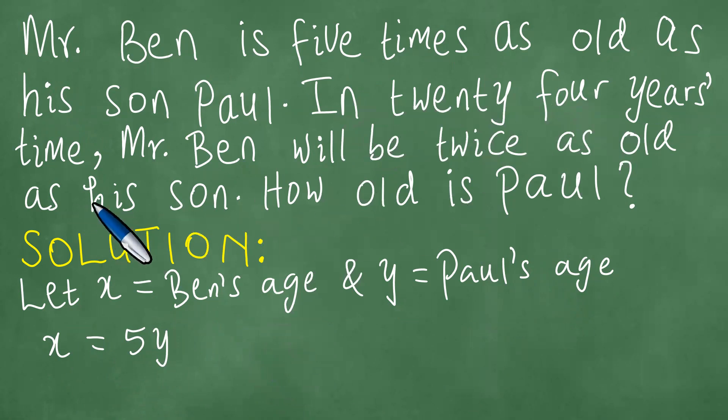Right, in 24 years time, Mr. Ben will be twice as old as his son. So we are comparing the ages of Ben and Paul in 24 years time. We're adding 24, but in 24 years time, Mr. Ben will be twice as old. So you must multiply Paul's age by two because Paul is less.